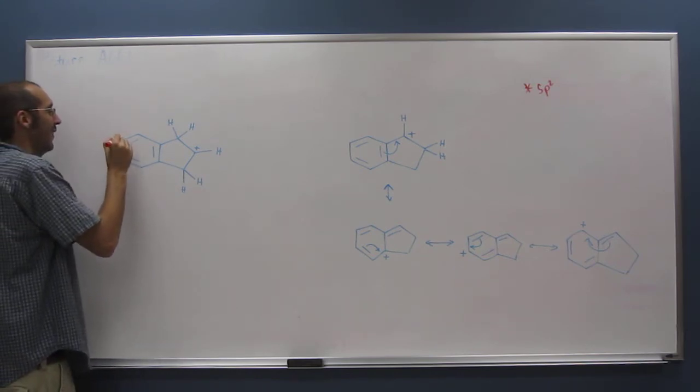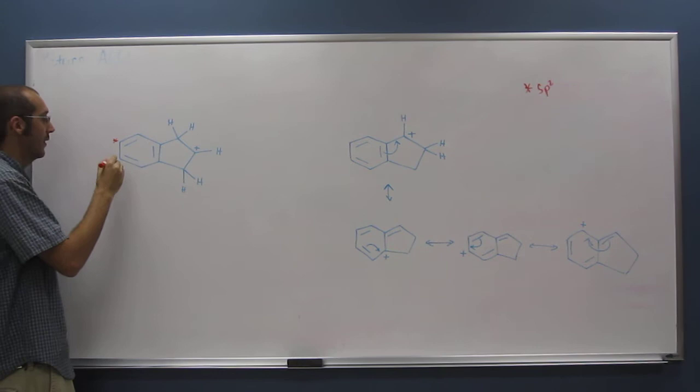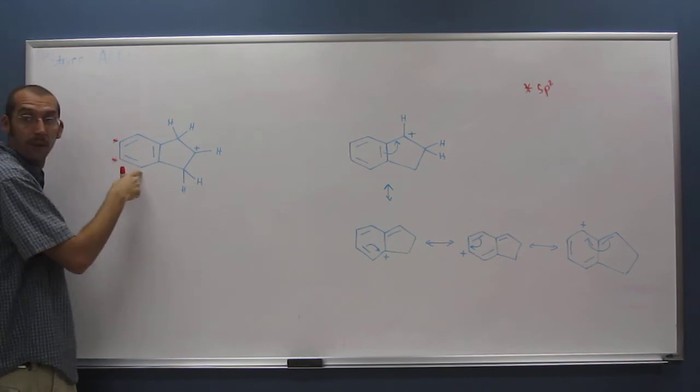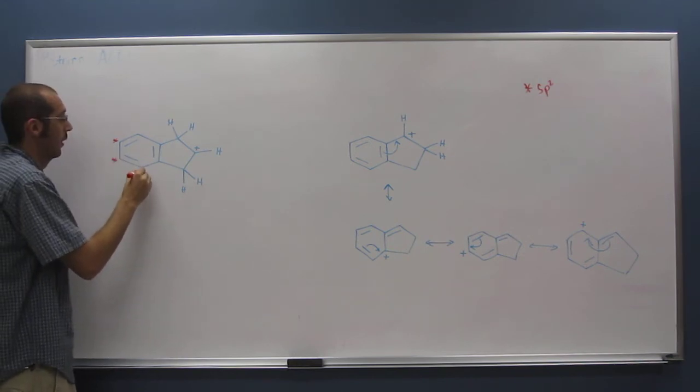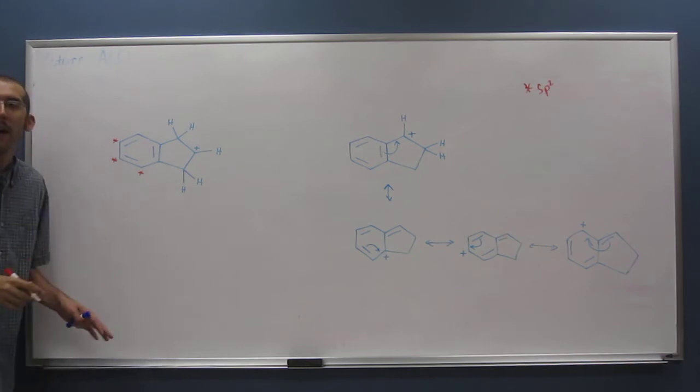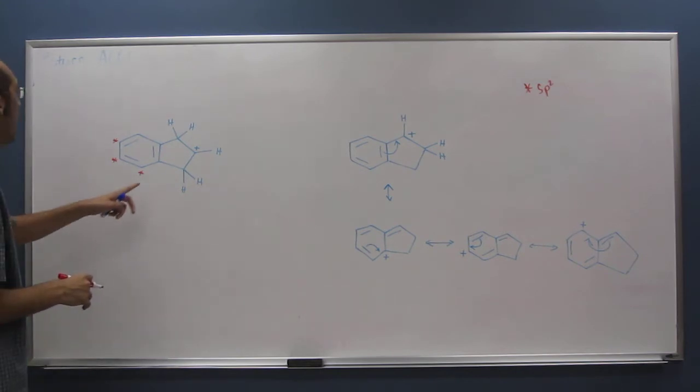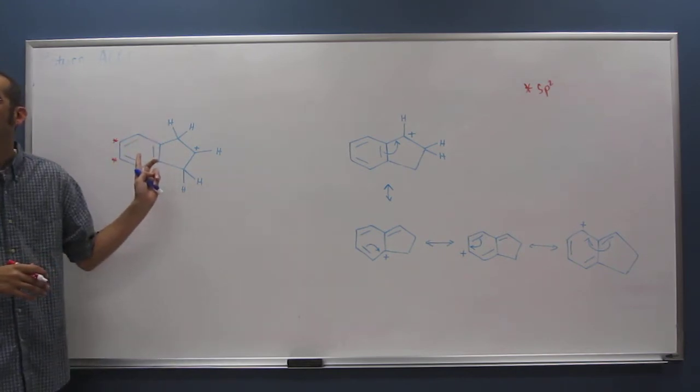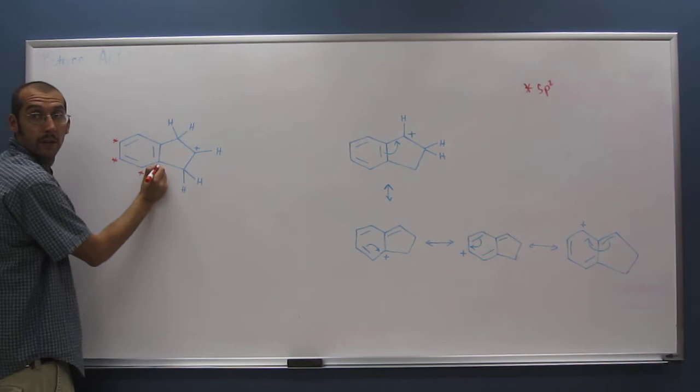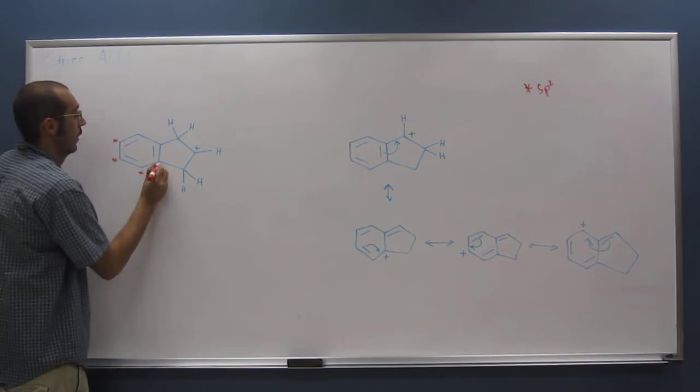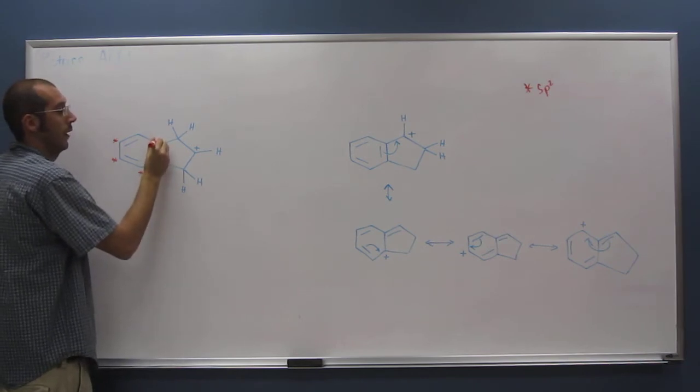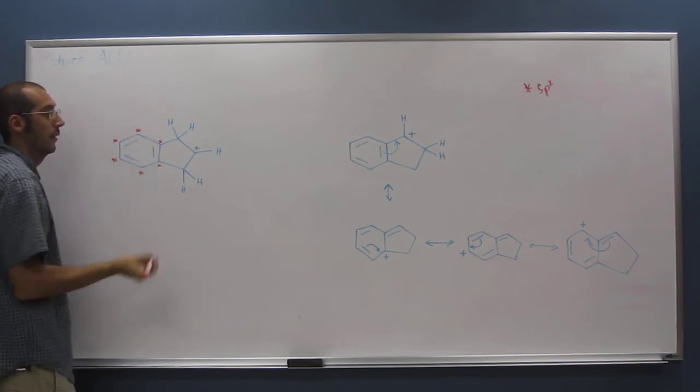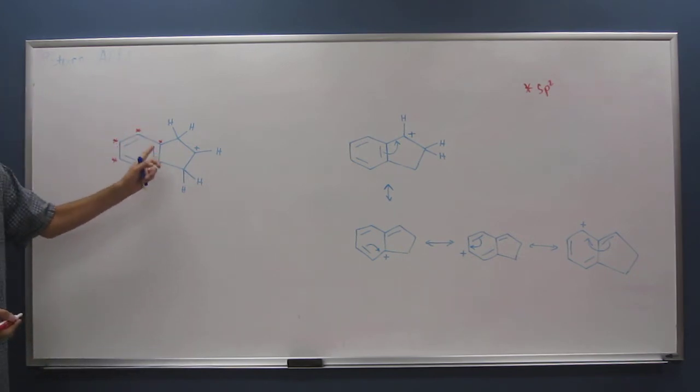So that one, that one, yes. That one, yes. So remember, sp2 and trigonal planar are like the same thing. So are all these carbons trigonal planar? Yeah, so is that one, yes. Is that one, yes. That one, yes. So all those are in a row, right?